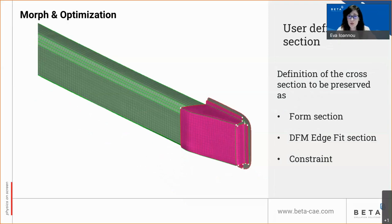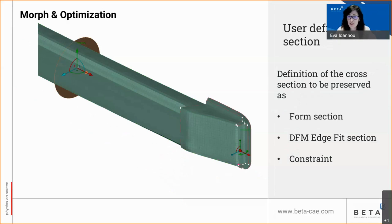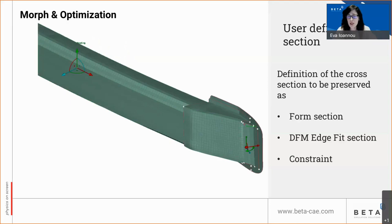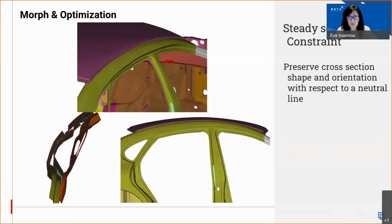Users can also modify the cross-sections to be preserved while morphing with form or DFM edge fit. The default section is normal to the neutral axis. A new user-defined section can be defined either by selecting two nodes — in which case the first acts as origin — or three nodes which define a plane. The same functionality is also available for the steady section constraint. The steady cross-section entities recently added in the DFM edge fit functionality can now be defined as separate constraints and therefore used in any DFM action.